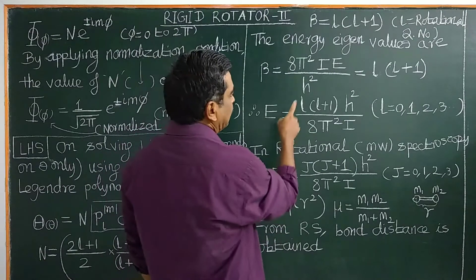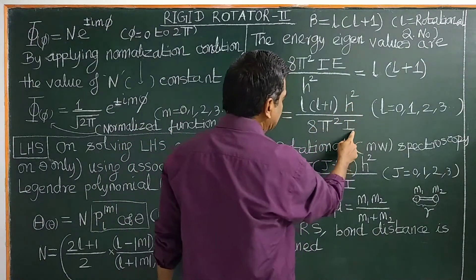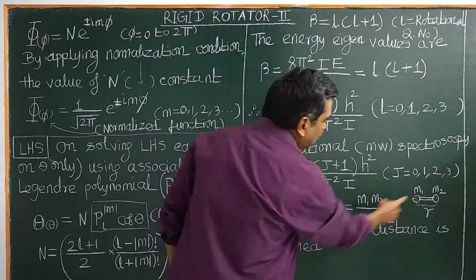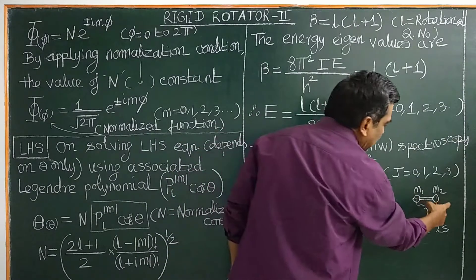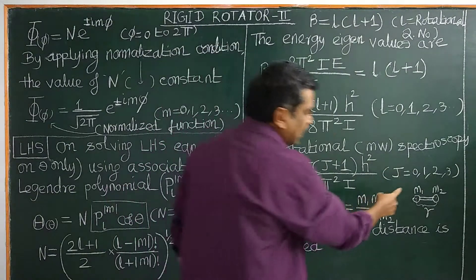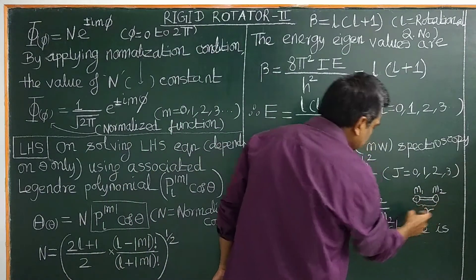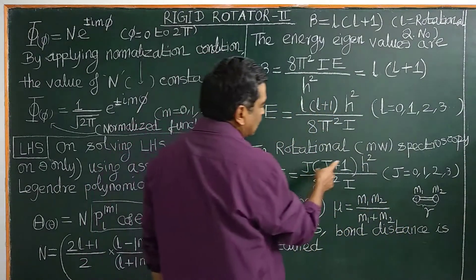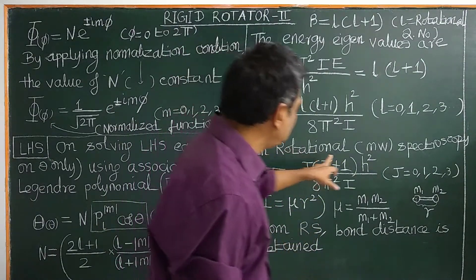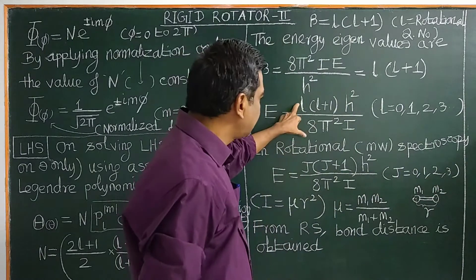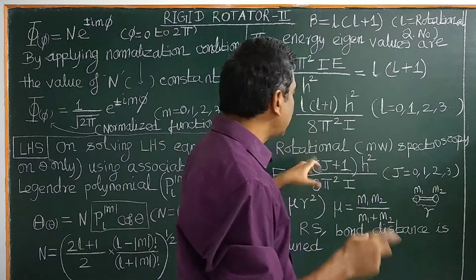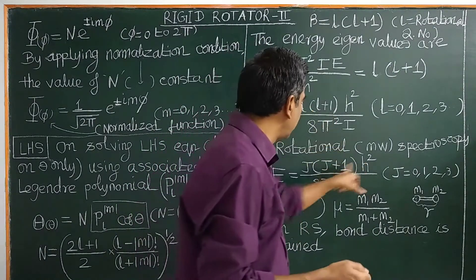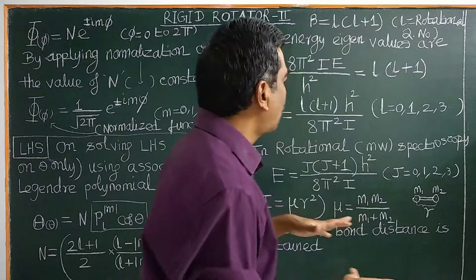The energy eigenvalues are given by E_L = h²·L(L+1) / (8π²·I), where I is the moment of inertia, I = μ·r², and μ is the reduced mass m₁m₂/(m₁+m₂) for a diatomic molecule, and r is the bond distance. In rotational and microwave spectroscopy, L is replaced by J, so E_J = h²·J(J+1) / (8π²·I), where J is called the rotational quantum number.